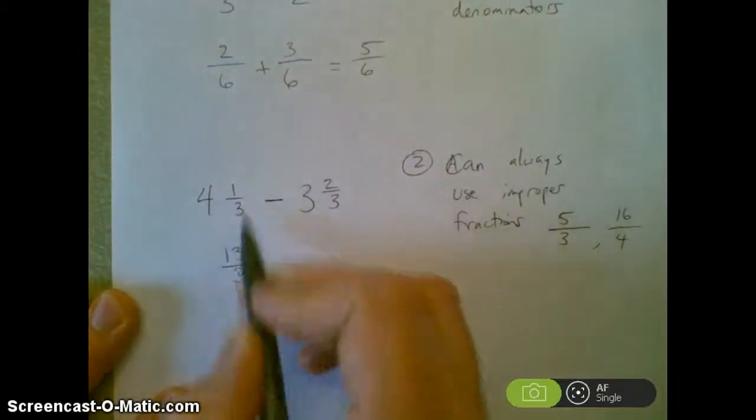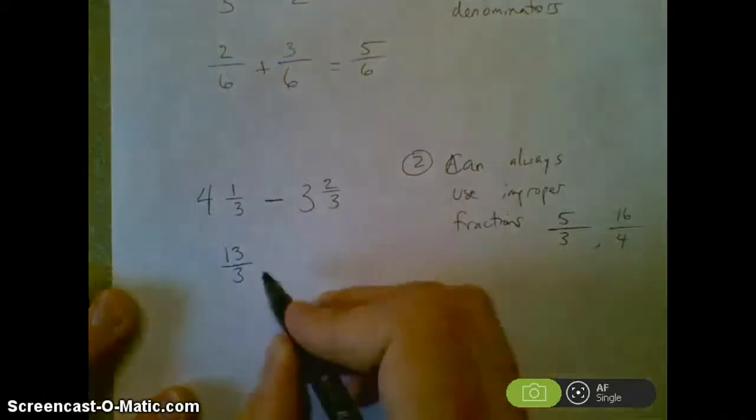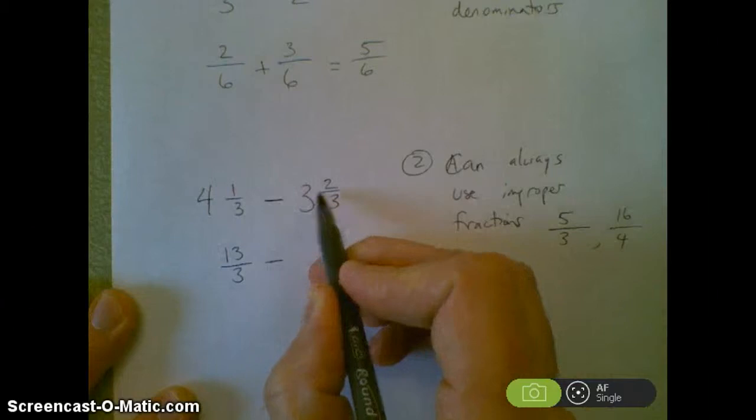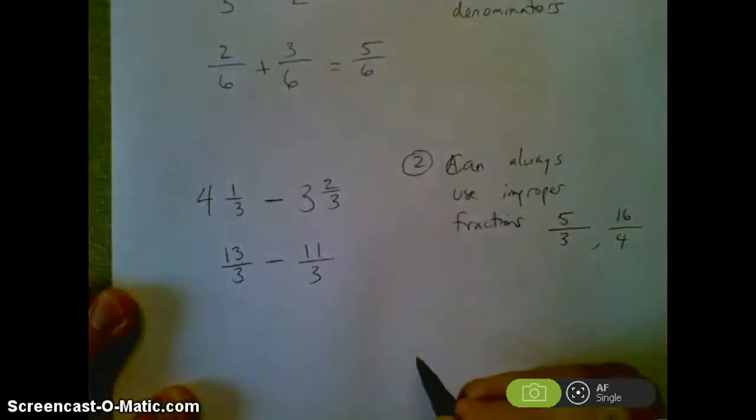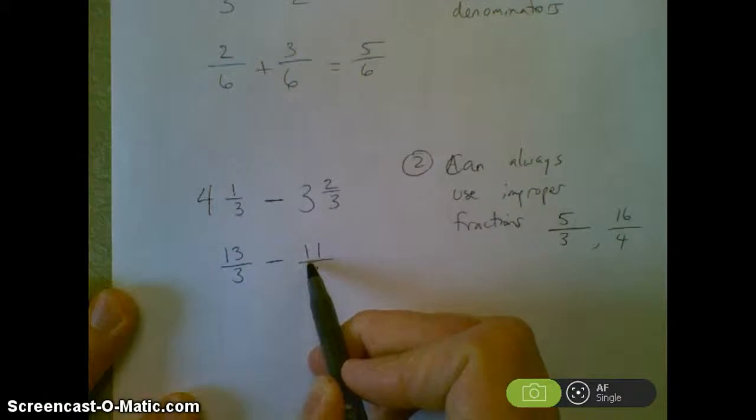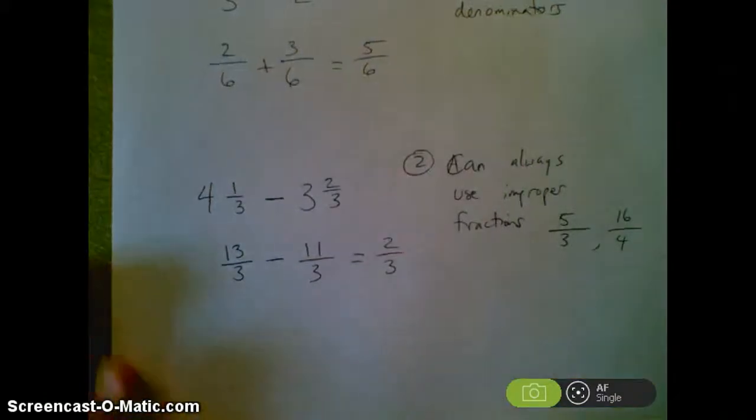So this 4 and 1/3 becomes 13/3. Minus 3 times 3 is 9, 9 plus 2 is 11, so this 3 and 2/3 becomes 11/3. I have 13/3, I take away 11/3, I'm left with 2/3. So that one worked out pretty well.